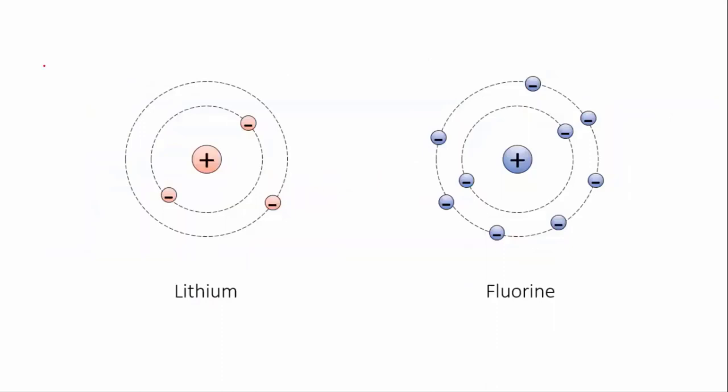If a non-metal atom bonds with a metal, the non-metal can take electrons from the metal and both become ions. The metal becomes a cation and the non-metal becomes an anion.